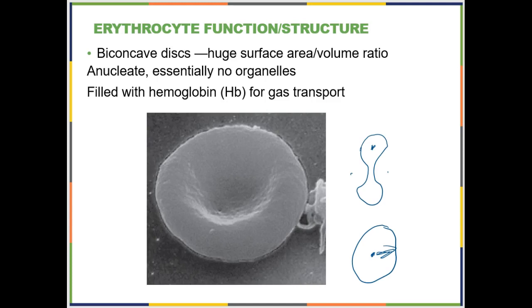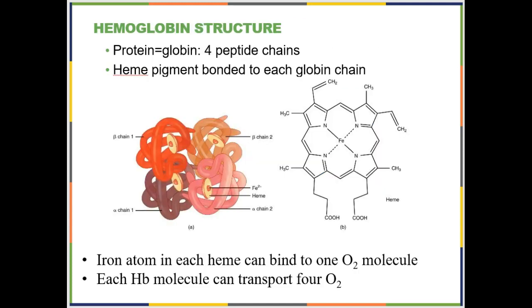Red blood cells have also dumped all of their organelles — they do not have a nucleus. They are basically sacks of hemoglobin with this specialized shape so that they can carry as much oxygen as possible.